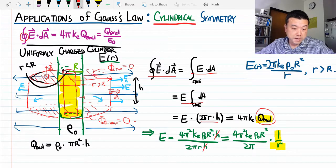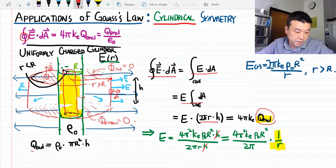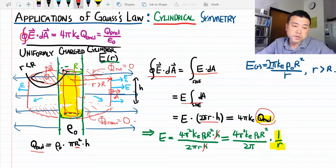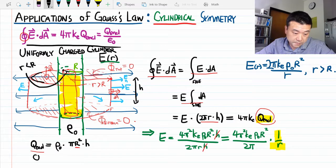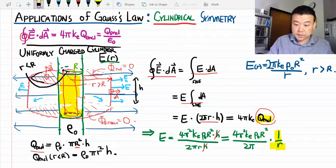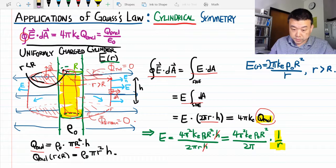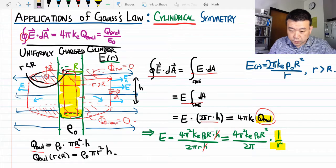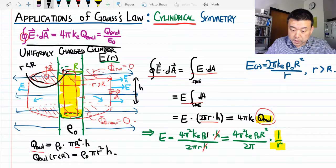we're not looking at the cylinder of radius capital R. We're really looking at radius lowercase r. Plugging in for q enclosed, the change is capital R² becomes lowercase r².